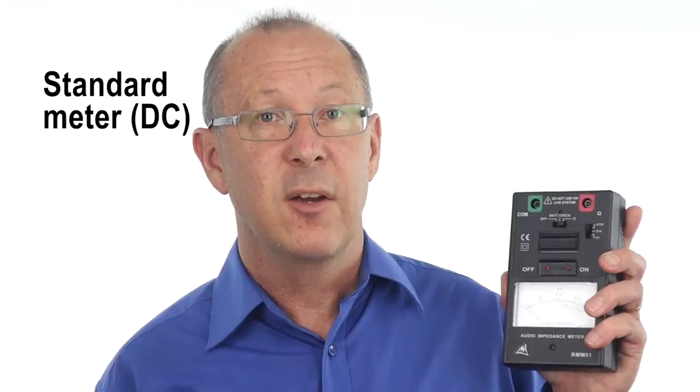Without getting too complicated and increasing the yawn factor to about 10, I'm going to go over some basic differences between these two meters. A standard multimeter checks the resistance in a circuit by applying a DC or direct current and displaying the result on the meter here.